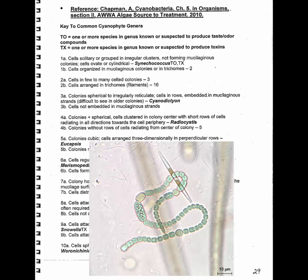So we go down to 1B: cells organized in a mucilaginous colony or in trichomes. A trichome is a filament. Then we go to 2A: cells in few to many celled colonies — the answer is no. Cells arranged in trichomes or filaments — the answer is yes. So we go to number 16.